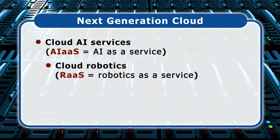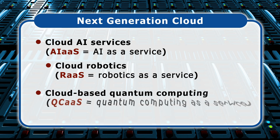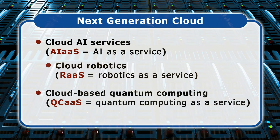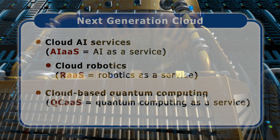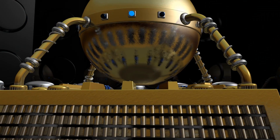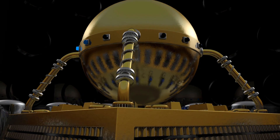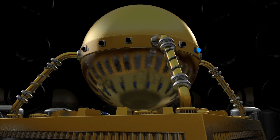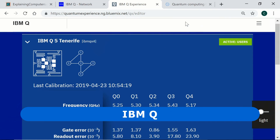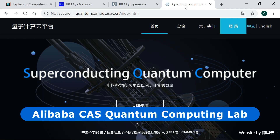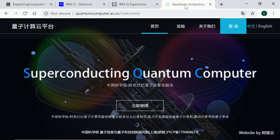Looking further ahead, an associated frontier will be cloud-based quantum computing, or quantum computing as a service. This will provide online access to quantum computers that will excel at simulations, optimizations, and the hosting of potentially new forms of artificial intelligence. Already, both IBM and Alibaba provide cloud access to functional, if experimental, quantum computers, so quantum computing as a service is already a reality.